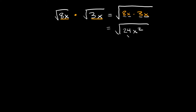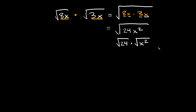What you want to do here is take the square root of just the number and take the square root of just the variable. So we're going to split this up into the square root of just the number, which is 24, and then we're going to multiply that by the square root of just the variable, which is x squared.